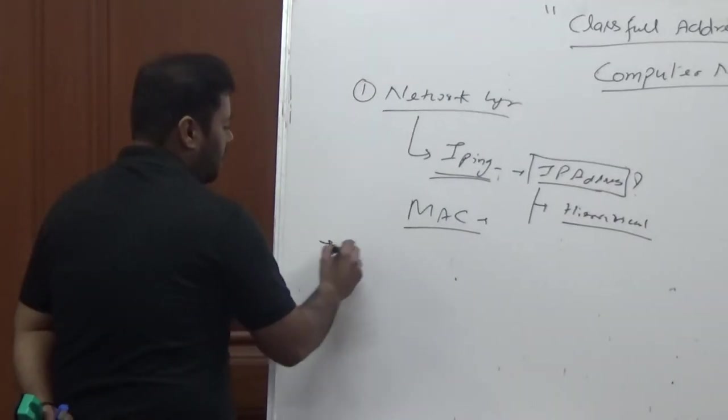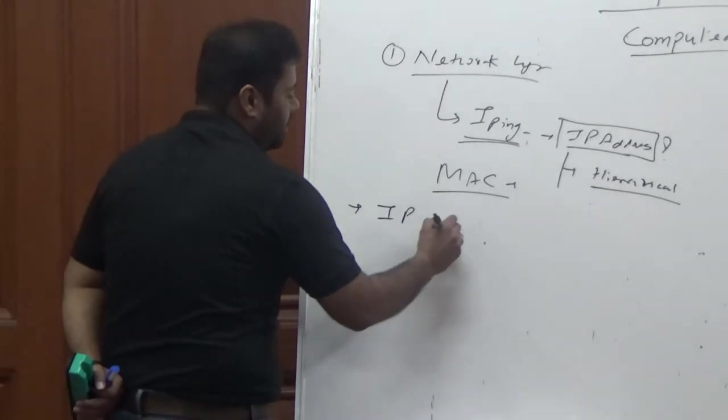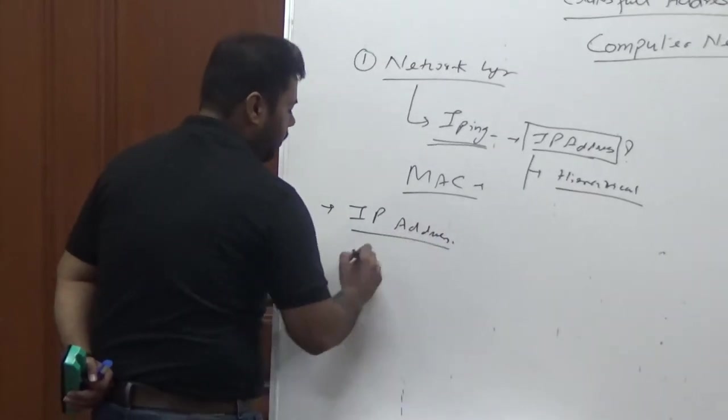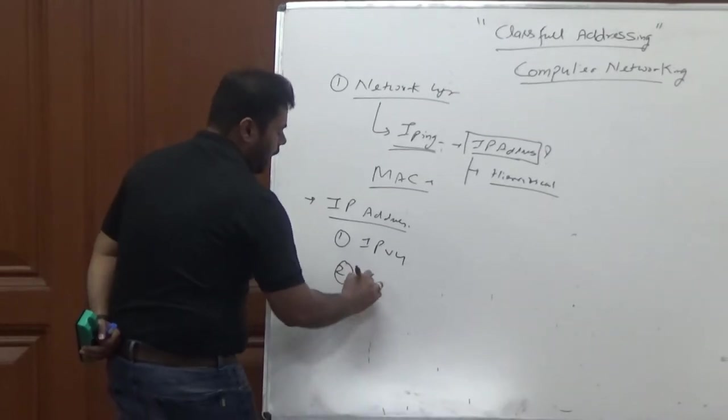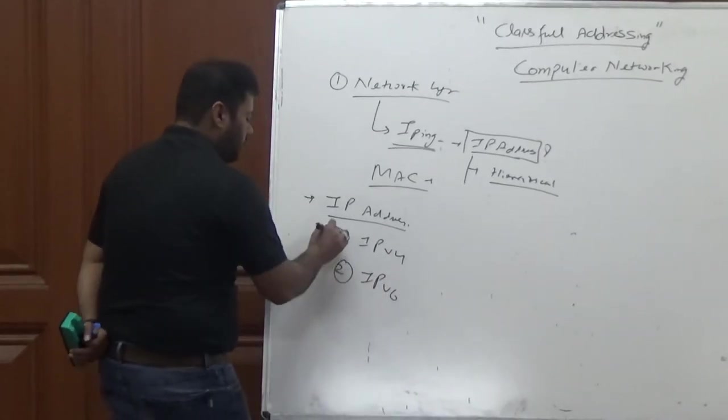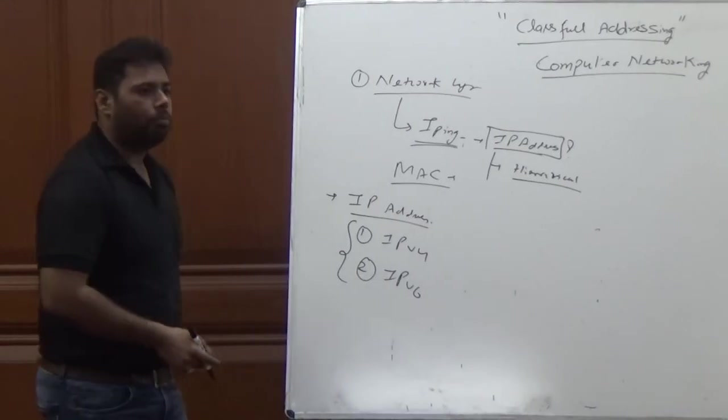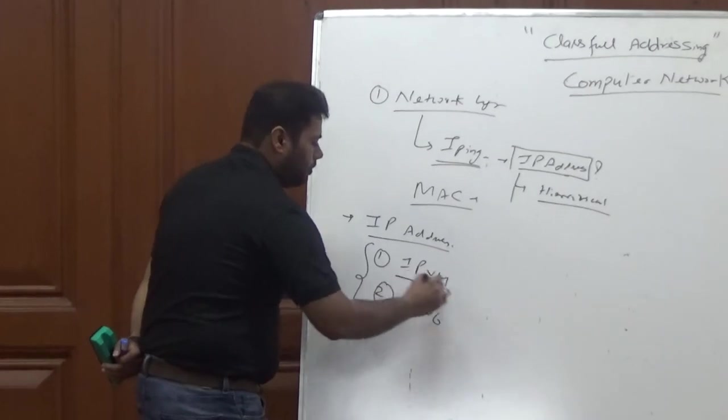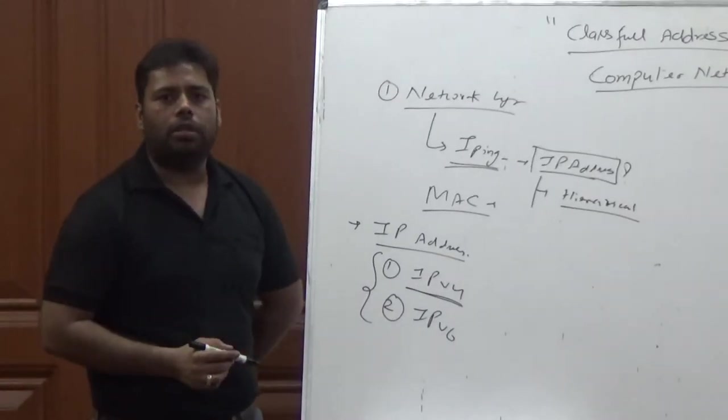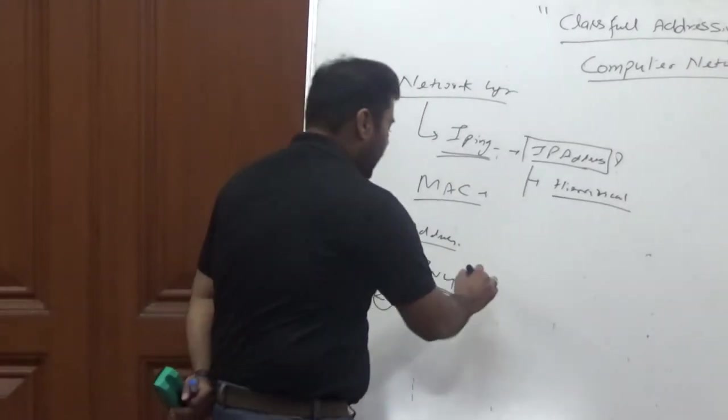IP address works with two versions of protocol. First one, IPv4, and second one, IPv6. IPv4 is working with 32-bit address.